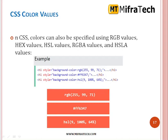Color values — there are some color values. We can represent with a color name or hexadecimal code. When referring to hexadecimal or RGB, be sure you know the hexadecimal code. If you don't know the hex code, you can use the color name only, like red, blue, white, etc. In CSS, colors can also be specified using RGB values, hex values, HSL values, RGBA values, and HSLA values. For example, RGB 255, 99, 71; hex value as a six-digit code FF6347; and HSL values 9, 100%, and 64% — all displayed as a similar output.